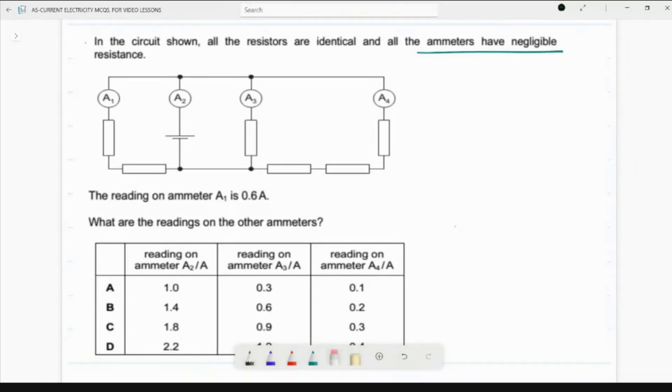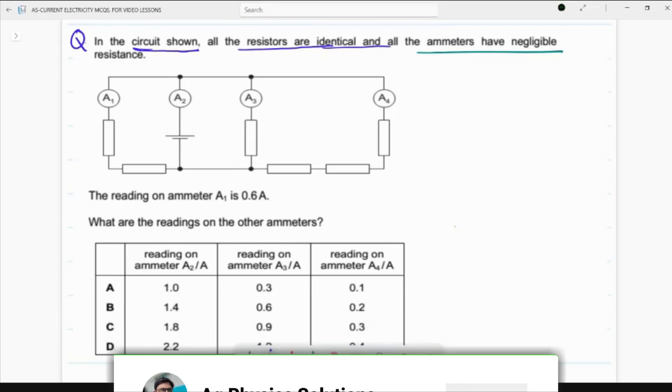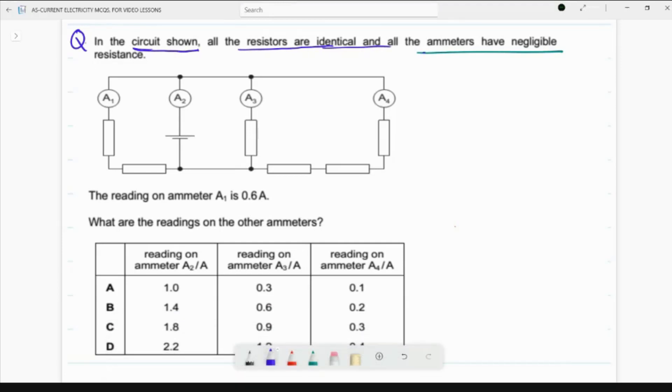Okay students, now in this question, this is another tricky question from current and electricity. The question states that in a circuit shown, all the resistors are identical and all the emitters have negligible internal resistance. The reading on ammeter A1 is 0.6 ampere. What are the readings on the other ammeters? This is the question.